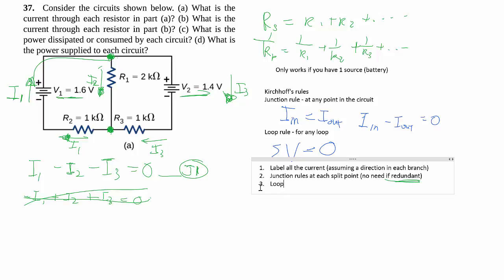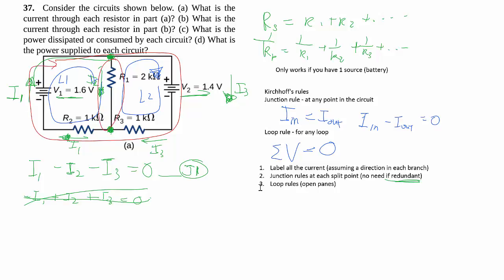Once you get the junction rule done, then the third step is to do the loop rules. And typically what we do is we do what's called open panes. So think of this circuit, kind of like a window. And we want a single piece of glass. We don't want to include any frame in it. So one loop could look like this, call that loop one. And then the second loop, we will go loop two here like that, making sure you have a direction. What we mean by open panes or the counter example to an open pane would be a loop that goes like this, all the way around.